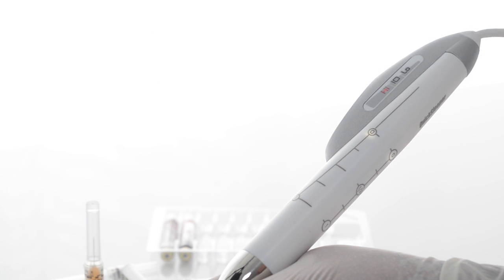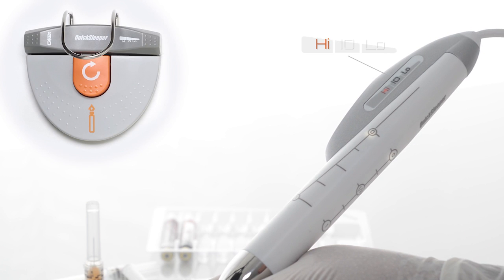QuickSleeper 5 offers three injection modes that can be selected by pressing the corresponding pedal. An indicator light on the handpiece shows the injection mode selected.